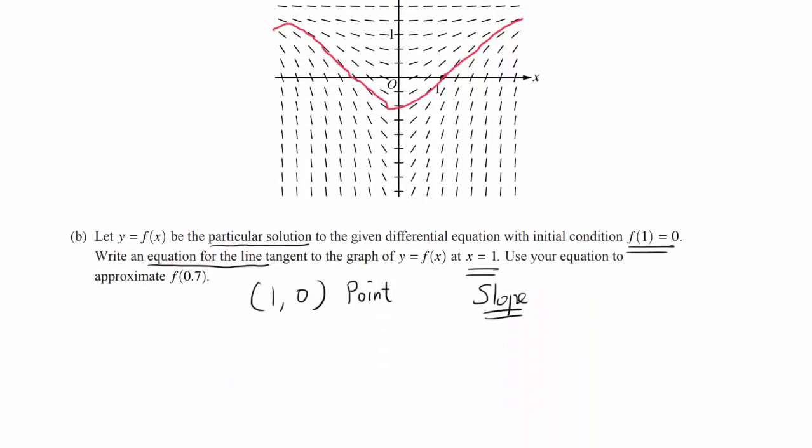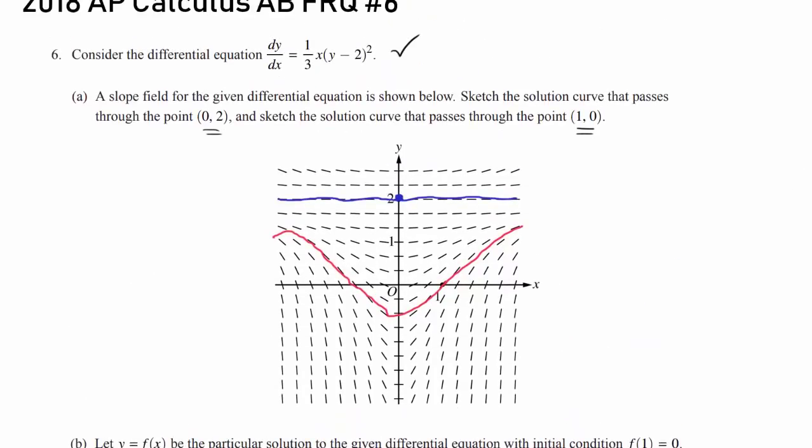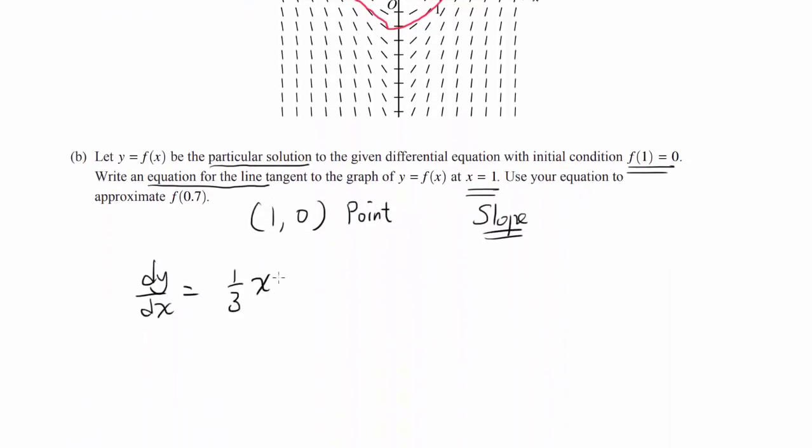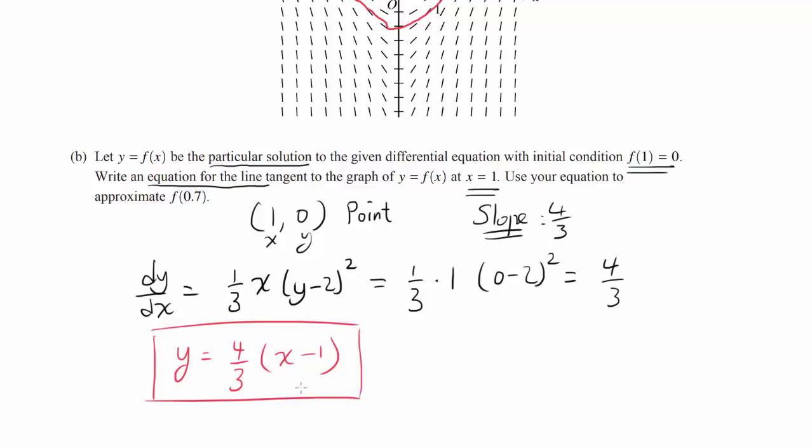So we know dy/dx = (1/3)x(y-2)². Plugging in point (1,0), we get (1/3)(1)(0-2)², also known as 4/3. And knowing the slope and the point, you can find the equation of the line, which is y = (4/3)(x-1). You can put +0 if you want to, but that's really unnecessary. So that's the equation of the line.